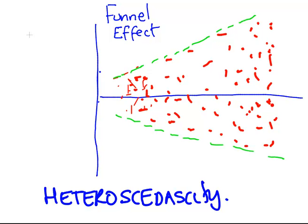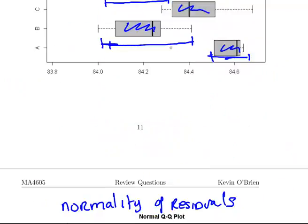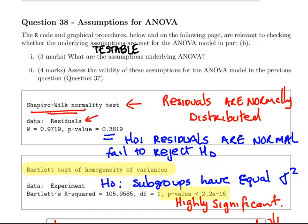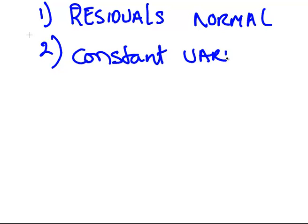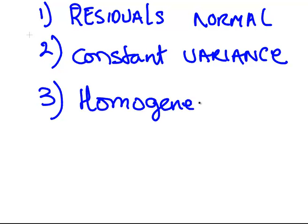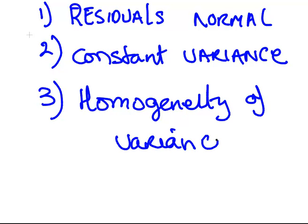That's the last of the three testable assumptions. There are formal tests you can do, but these plots serve as a good diagnostic procedure. To review: one — residuals are normally distributed; two — constant variance of residuals, checking for heteroscedasticity and autocorrelation; and three — homogeneity of variances amongst the subgroups. That completes the question on testing ANOVA assumptions.